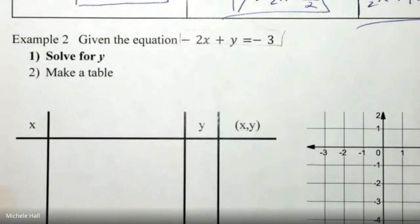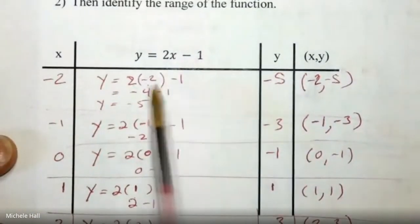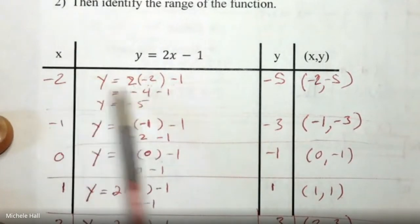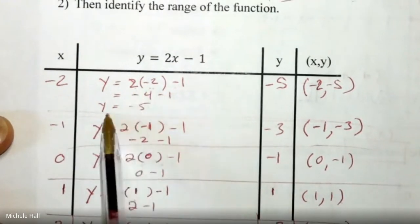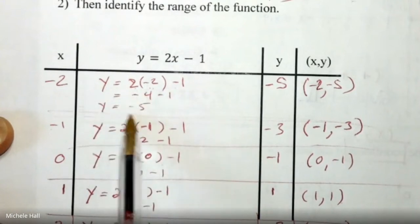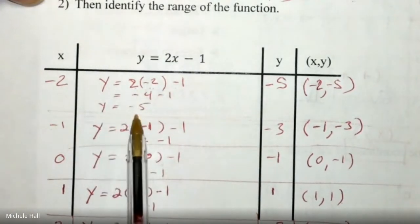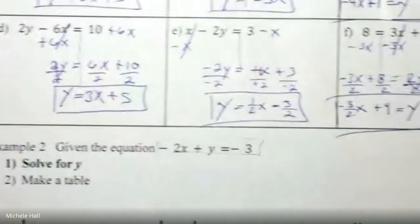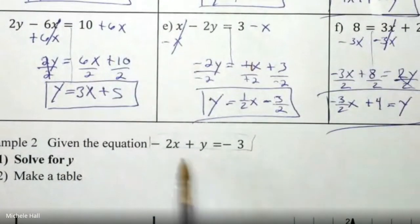The first thing that you have to do to be able to graph is we need to get Y by itself. In this equation right here that we did before, Y was by itself. We had some X values and then it automatically said at the end, Y equals a number. That's why you want to get Y by itself. So at the end of it, it will say Y equals some number. The first thing we're going to do is solve for Y.